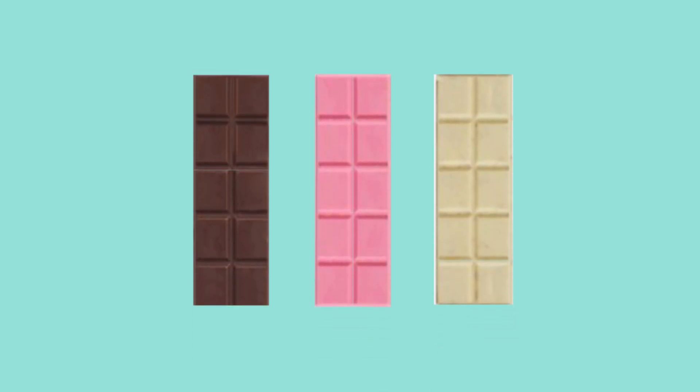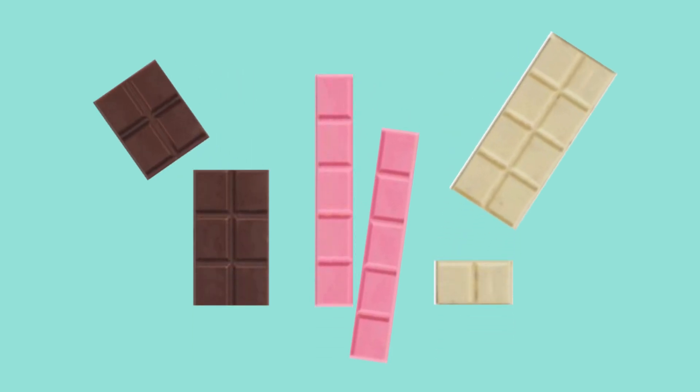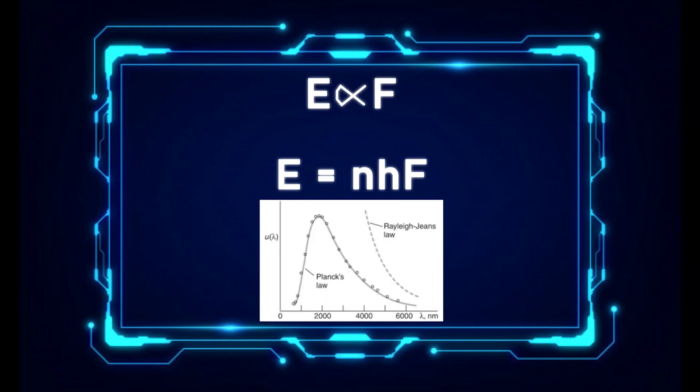It's like this. When you want to buy chocolate, you can buy one, two or three full bars. There is no option of buying half or any quantity in between. Energy is released in these discrete quantities called quanta. And each quantum is proportional to the frequency and related through an integer multiple of Planck's constant.